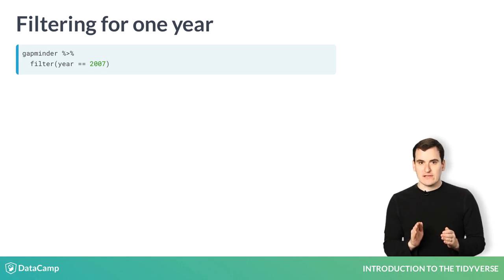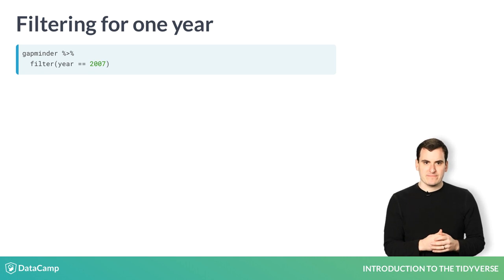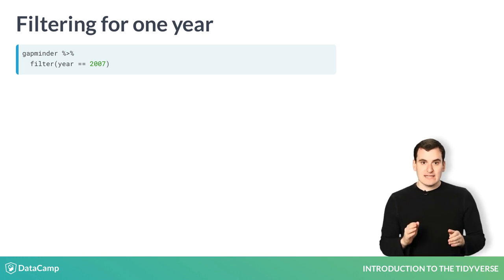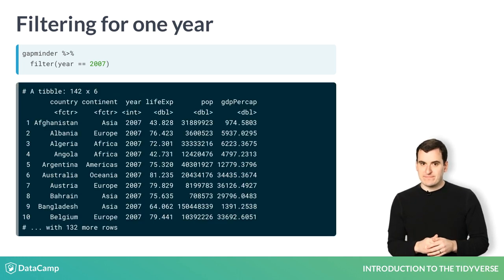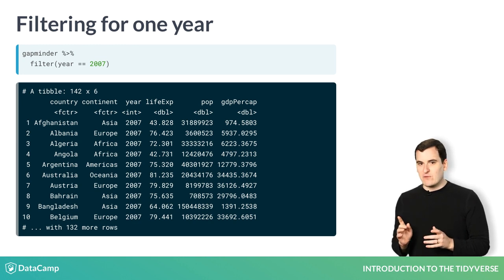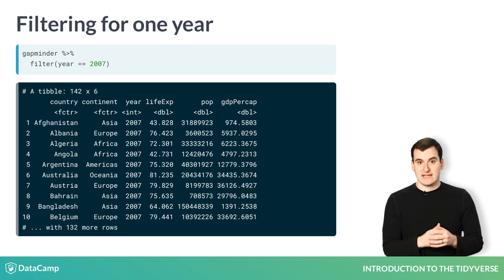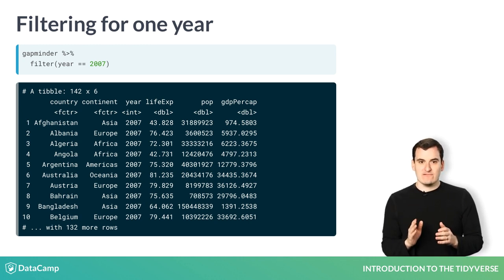A single equals here would mean something different in R, which you'll see later. Here, we're saying we want to filter for only the observations from 2007. Let's see what this code outputs. Notice that now we have only 142 rows — that's how many countries are in the data set.